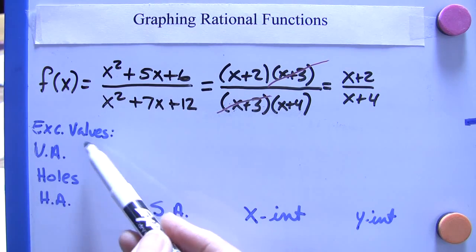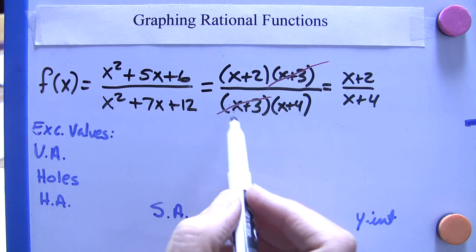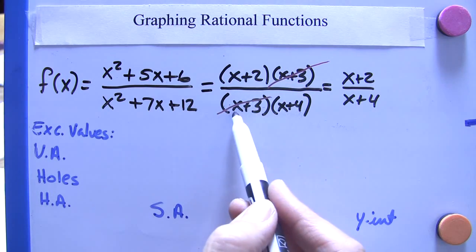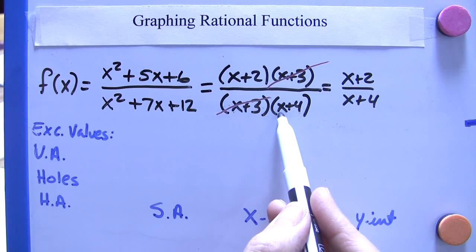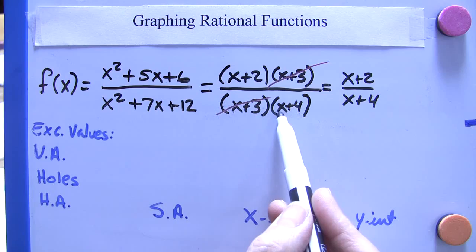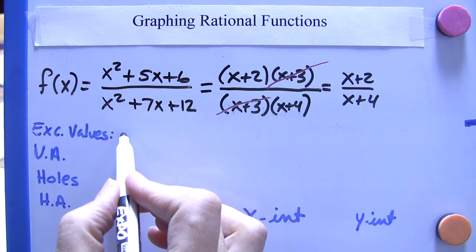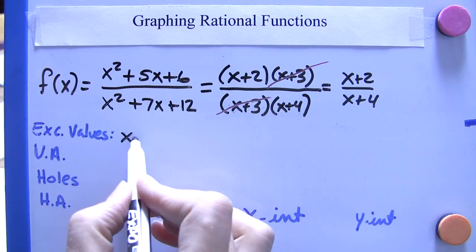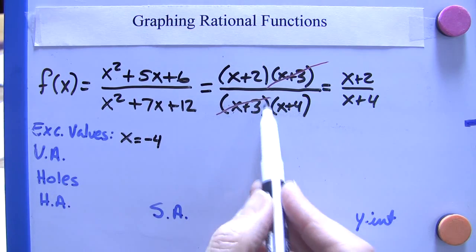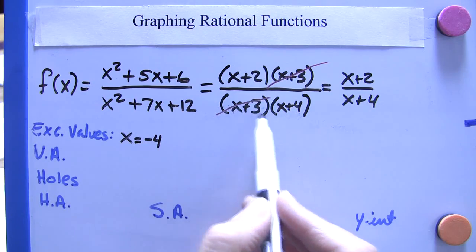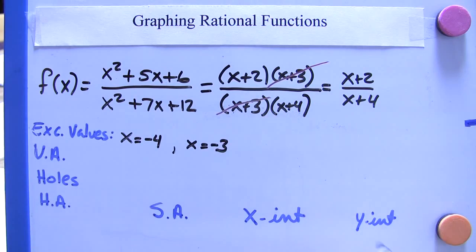Now that we've simplified this, we can begin to go down our list here. The excluded values. Well, where is the denominator 0? Even though we've reduced this out, we still have to consider this point here. An obvious excluded value is where x is negative 4. If x was negative 4, this would be 0 and we cannot have 0 in the denominator. So one excluded value is at x equals negative 4. The other excluded value, even though it was reduced out, is at x equals negative 3.